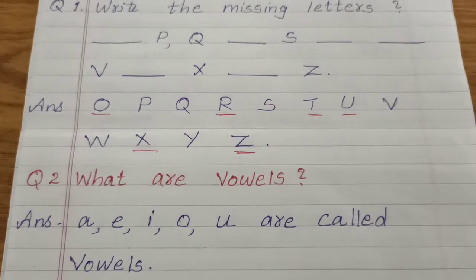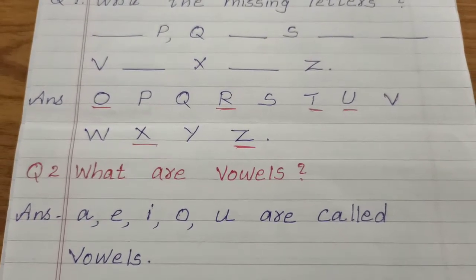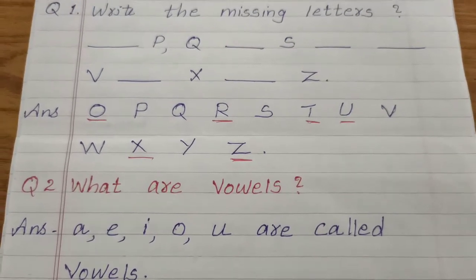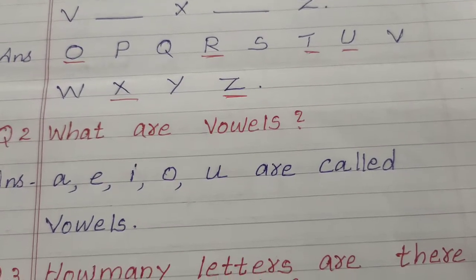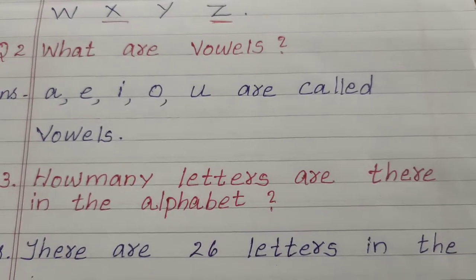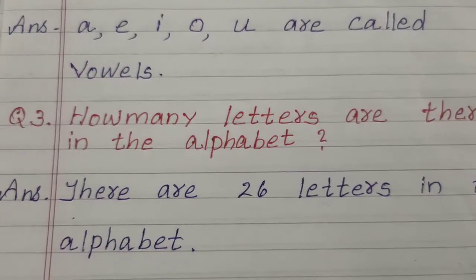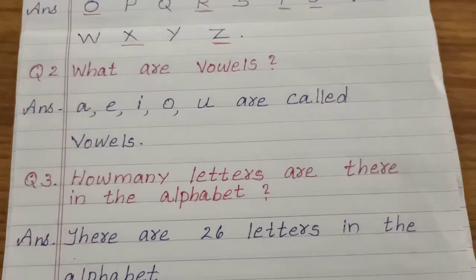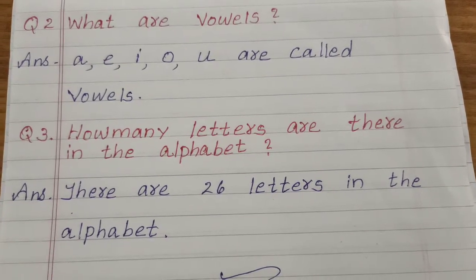Then question number 2: What are vowels? Answer: A, E, I, O, U are called vowels. Question number 3: How many letters are there in the alphabet? Answer: There are 26 letters in the alphabet.